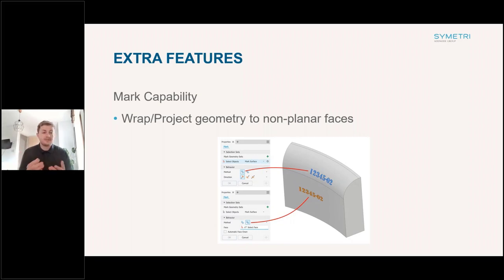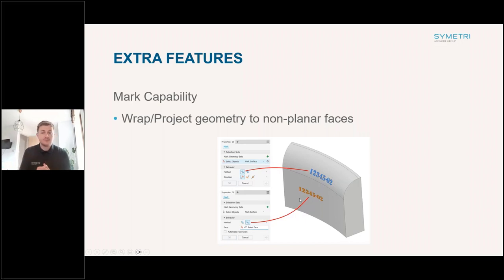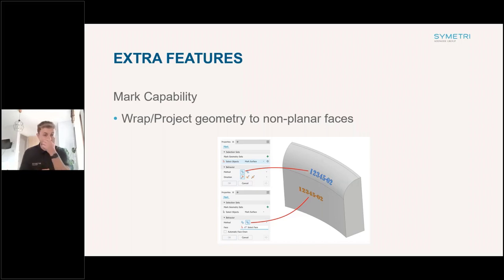Another small feature for the mark capability: there's now an option similar to the Emboss tool where you can wrap it to a particular face. If you've got a sketch or some text wrapping to a non-planar or curved face, you've now got the option to select and wrap it to that particular face. You've still got the same option to project to the face as well, so you have both options depending on how you want to export that file.